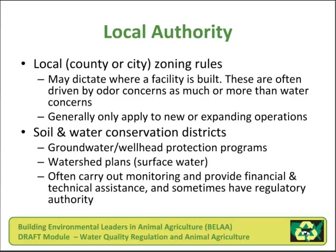Local authority. There may be additional rules, laws, or zoning issues at the local, county, or city level that dictate where an agricultural facility is built. Often, these rules are driven by odor concerns much more than water quality concerns. Generally, these local rules apply to new or expanding operations, as existing operations are often grandfathered in. Soil and water conservation districts are also involved, mostly through voluntary education and implementation of best management practices. They may include groundwater and wellhead protection programs and watershed plans. The districts often carry out monitoring and, similar to USDA, provide financial and technical assistance. In some cases, the districts may have some regulatory authority.